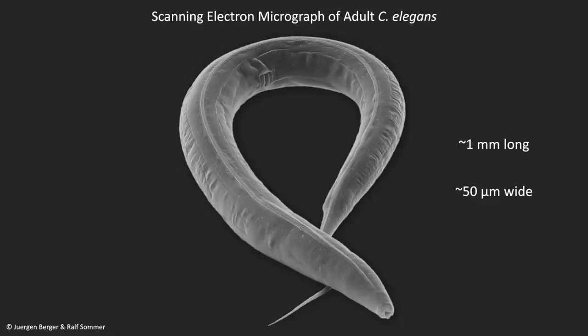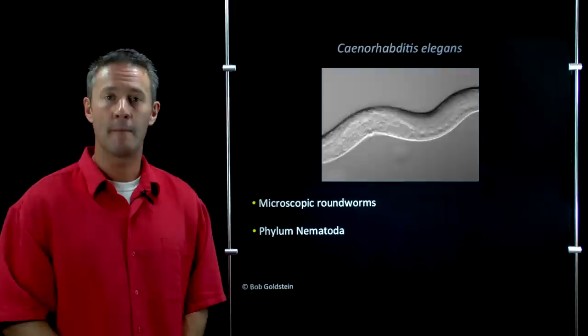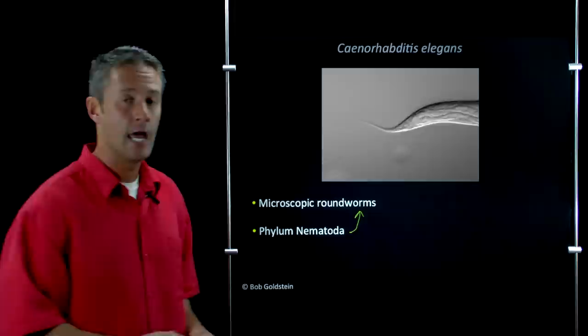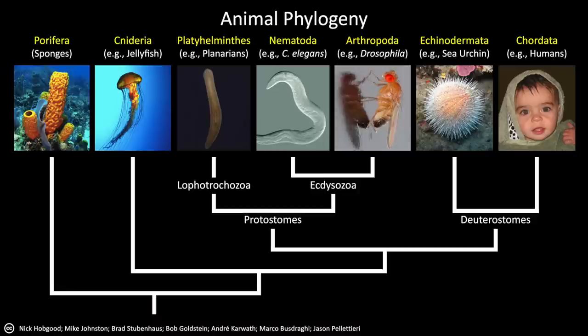C. elegans are part of the phylum Nematoda. The nematodes are more commonly known as the roundworms, and this is a group of well over 20,000 different species found all over the world. In turn, the nematodes are grouped with several other phyla as part of the Ecdysozoa, the largest group within the animal kingdom. The ecdysozoans are characterized by having an external protective covering called a cuticle that they periodically shed. This includes not just the nematodes, but also the arthropods, such as Drosophila, the other most widely studied invertebrate model organism.